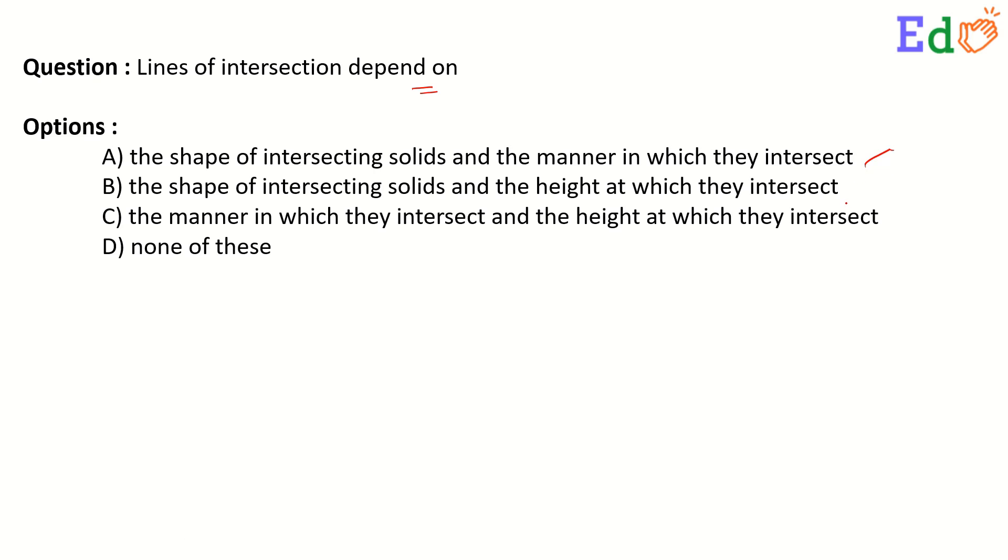Option B: The shape of intersecting solids and the height at which they intersect. Option C: The manner in which they intersect and the height at which they intersect. Option D: None of these.